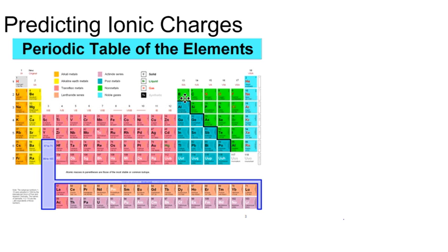The non-metals on this side of the zigzag line will form negative ions. So anything in group seven will form an ion with a charge of minus one, anything in group six minus two, anything in group five minus three.